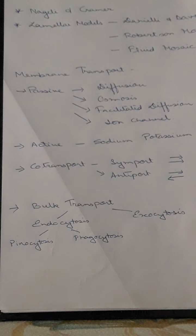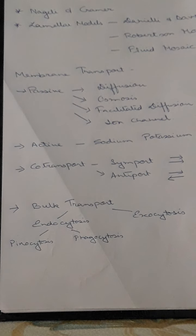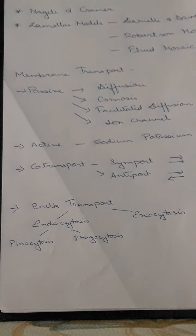In passive transport, substances pass from one cell to another with no expenditure of energy and no special activities — they simply move from one surface to another. This includes diffusion, which is the movement of solids, liquids, or gases from higher concentration to lower concentration. Second is osmosis — the transfer of solvent (water) from a region of higher concentration to lower concentration when separated by a semi-permeable membrane, which allows only the solvent to pass through.